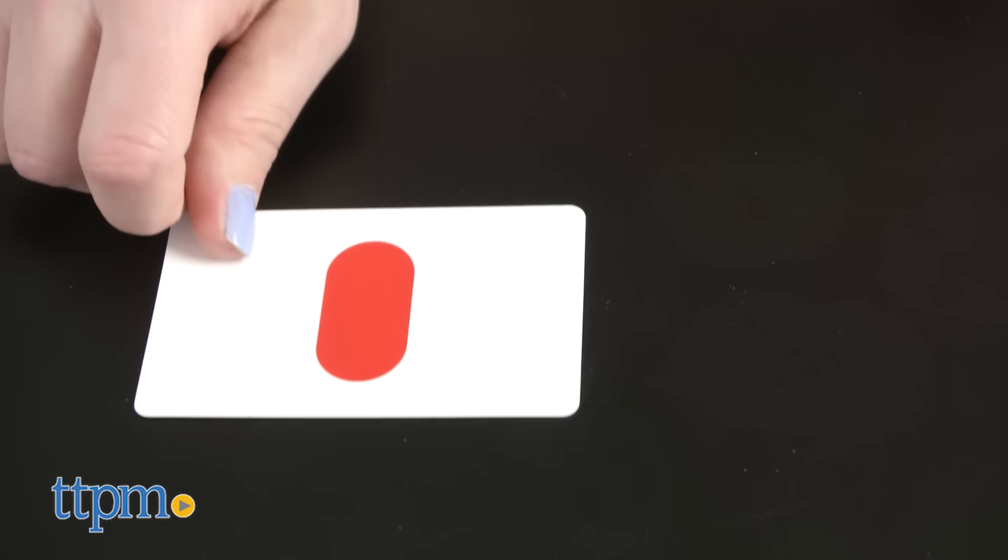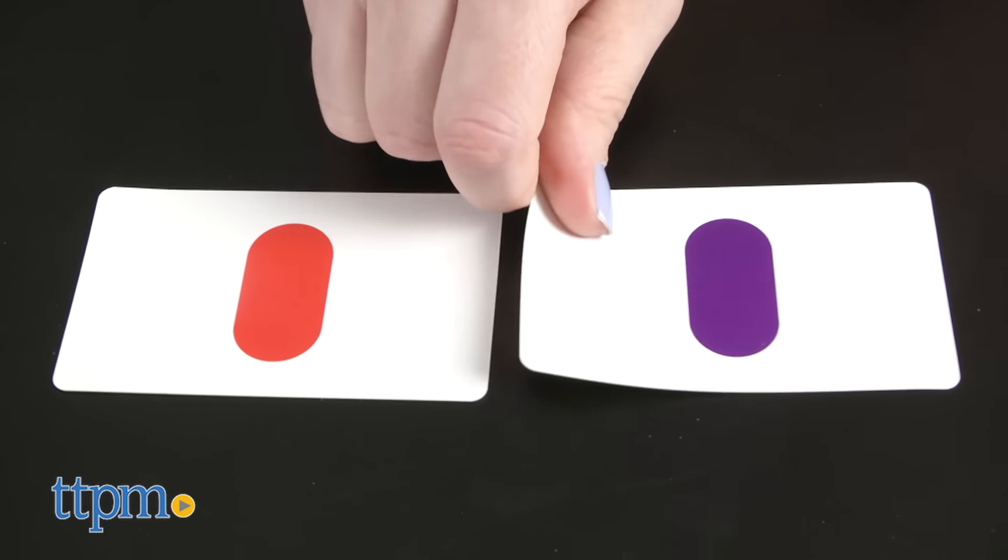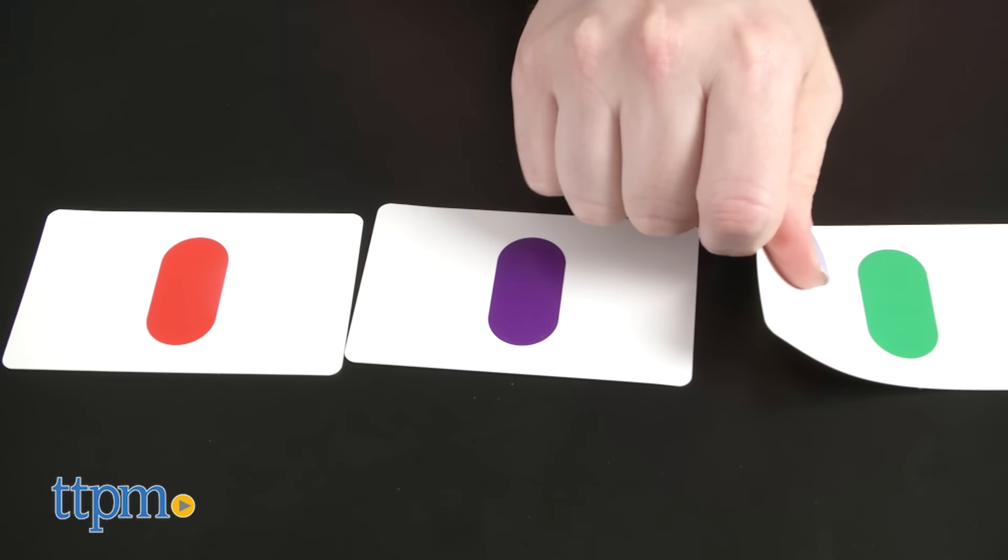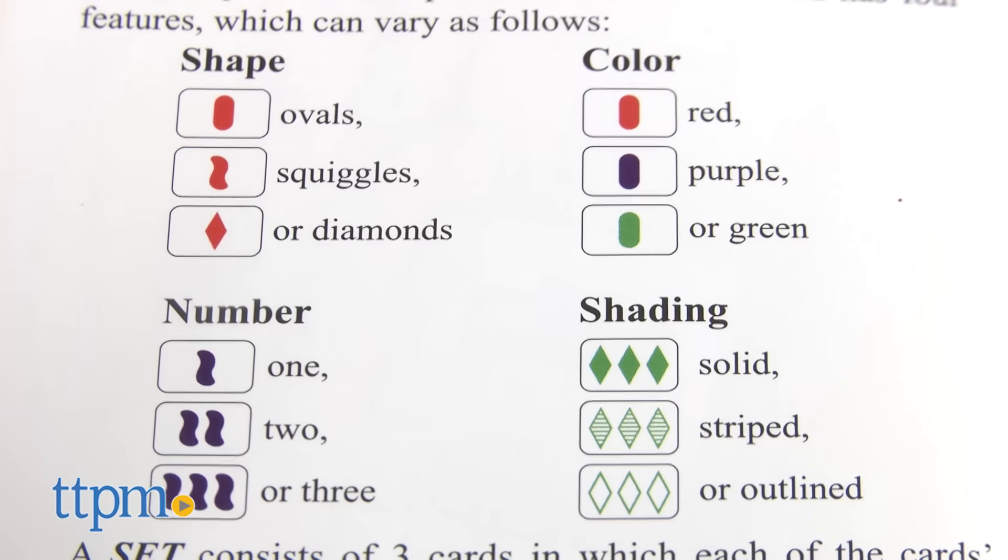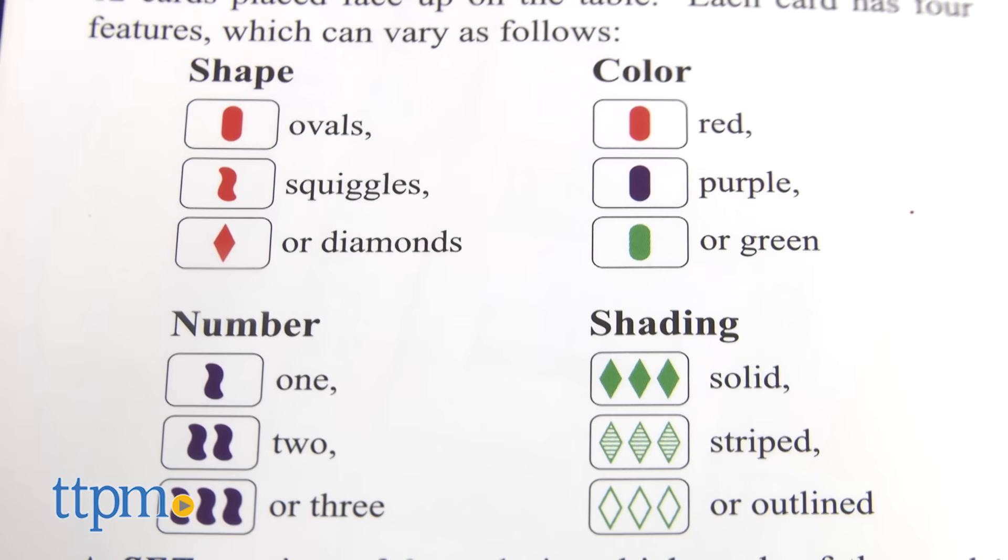you're trying to find the most sets. What's a set? Well, it's three cards that are either all the same or all different in each individual feature. The game has 81 cards with four features: shape, color, number, and shading.